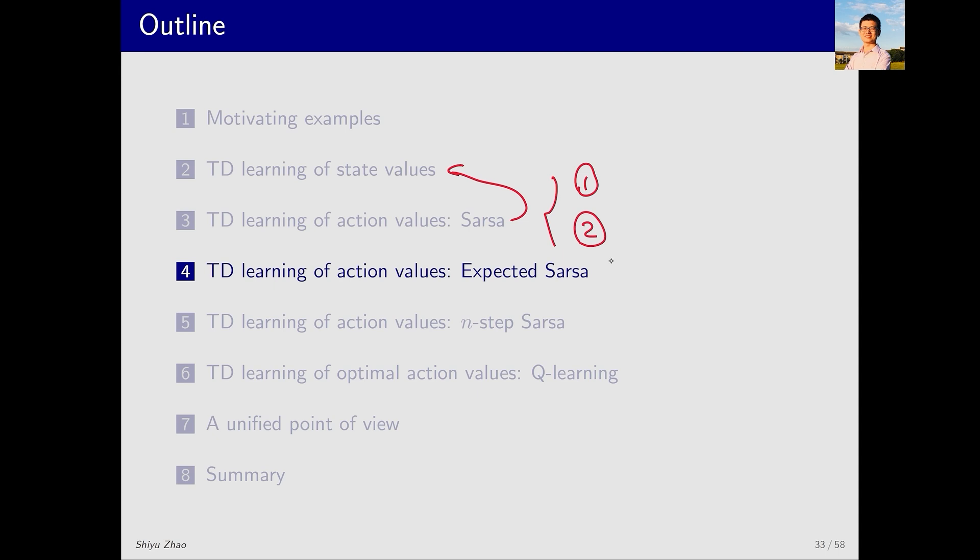Next we introduce two variations of SARSA: EXPECTED SARSA and N-STEP SARSA. While they are not as important as SARSA, I still want to include them here to show how, starting from a classic algorithm, we can make extensions and improvements. This is a common approach for doing research. Nevertheless, if you are not interested you can skip the part about EXPECTED SARSA. I however still suggest you check the part on N-STEP SARSA because it can unify TD learning and Monte Carlo learning.